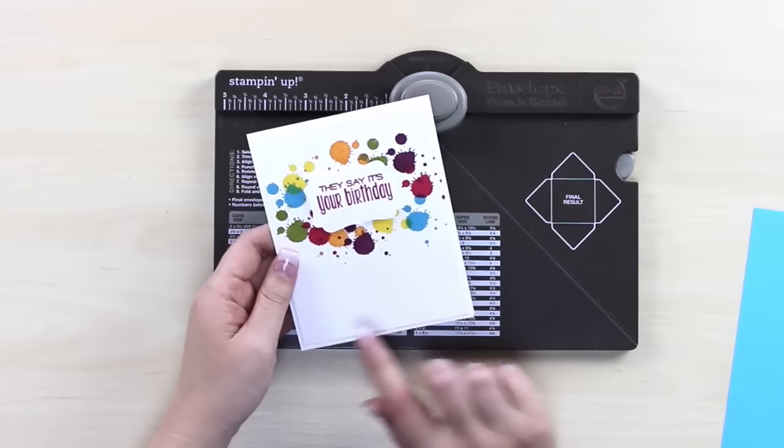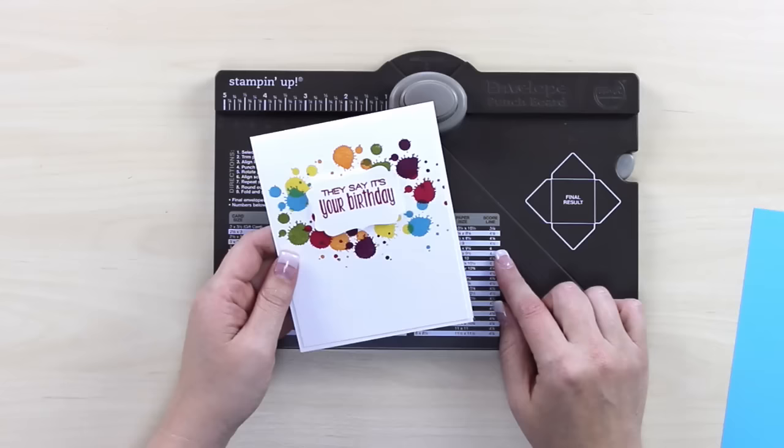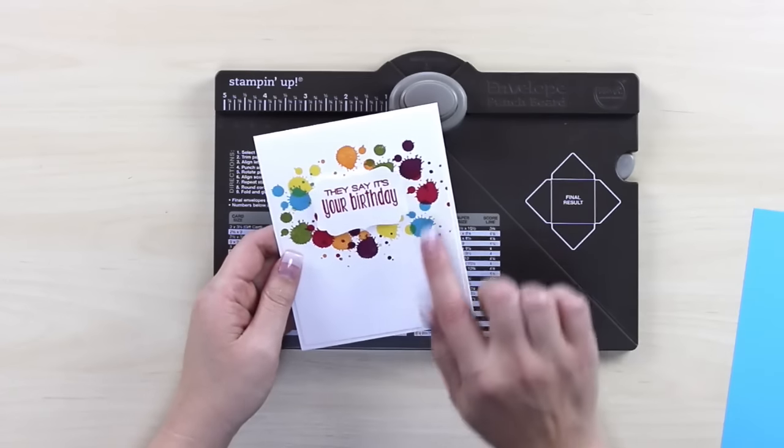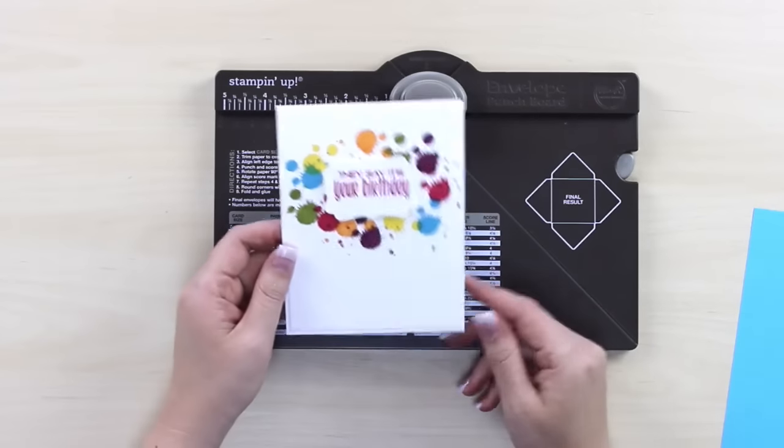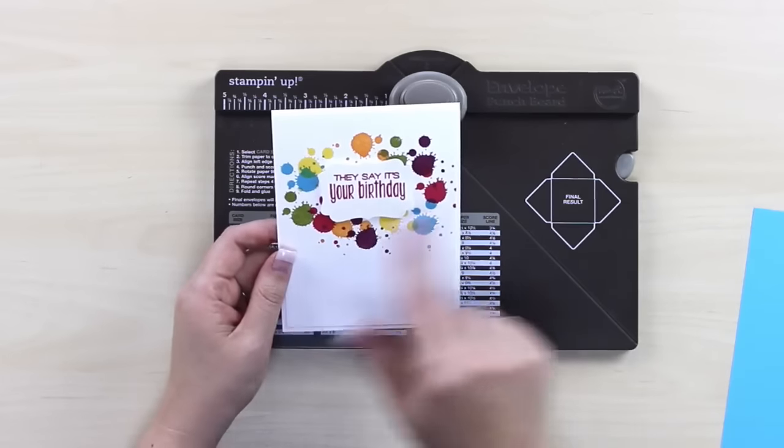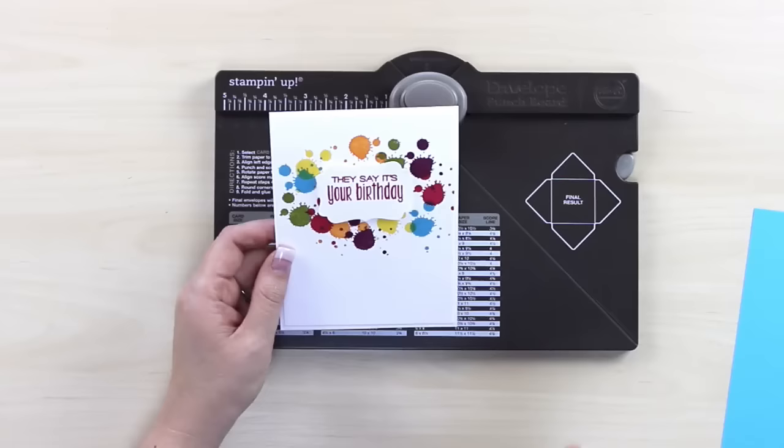We're going to be making an envelope to go along with this cute card right here. So I went ahead and just picked a color out of this color palette and I went with Tempting Turquoise. This is a standard A2 card, meaning it is four and a quarter by five and a half at its finished size.